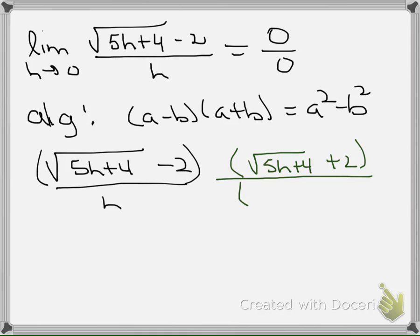And then we're going to divide by the same so that we don't change the expression. Square root of 5h plus 4 plus 2. All of that stuff on the right hand side in the green, if you look at it, it's just one. So I've not changed the actual problem that I'm trying to solve, which is this one up here.